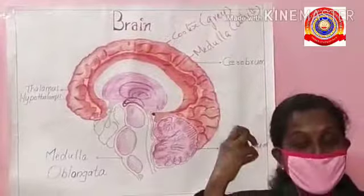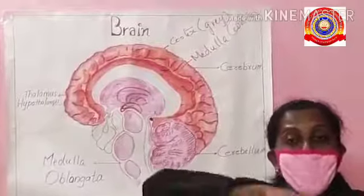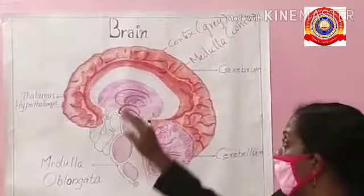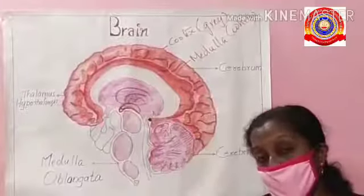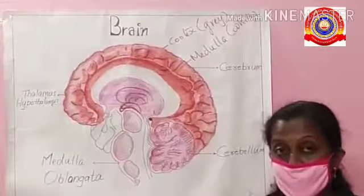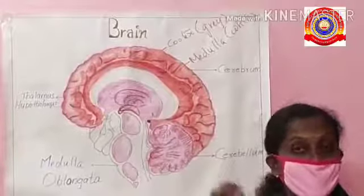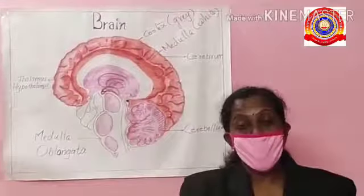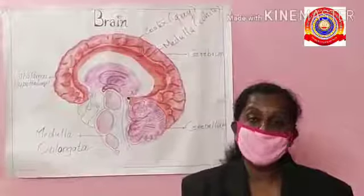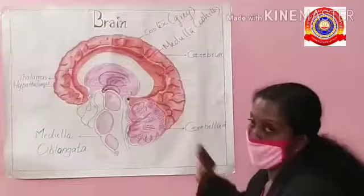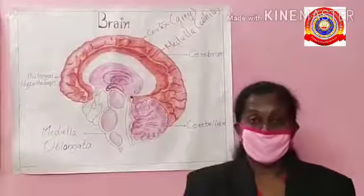The function of the cerebrum: it is the center of thought. Thinking, imagination, memory, and intelligence are all controlled by the cerebrum. It also controls sensory activities such as seeing, hearing, tasting, and touching.